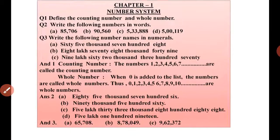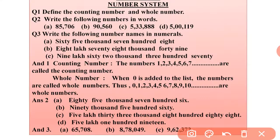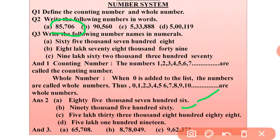Question 2: Write the following numbers in words. For example, 855706 can be written in words. Similarly, 90560 is written as ninety thousand five hundred sixty. And 533388 can be written as five lakh thirty-three thousand three hundred eighty-eight. Similarly, 5011 can be written as five lakh one thousand one hundred nineteen.